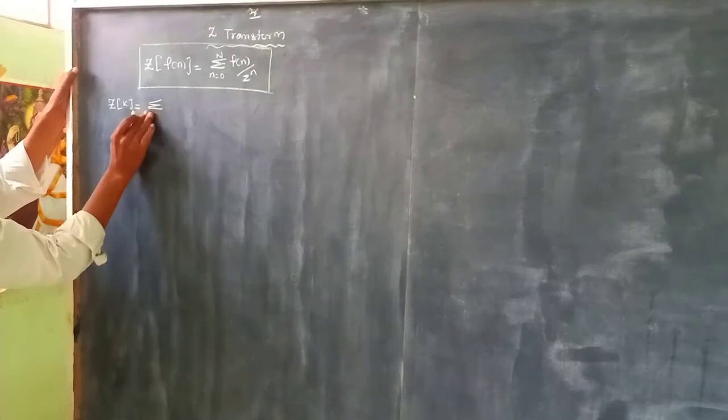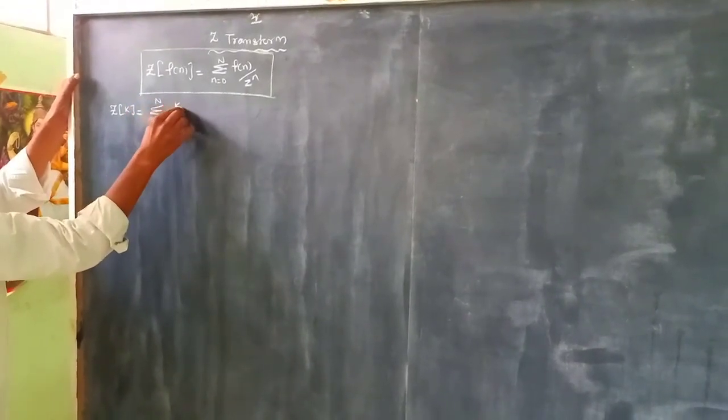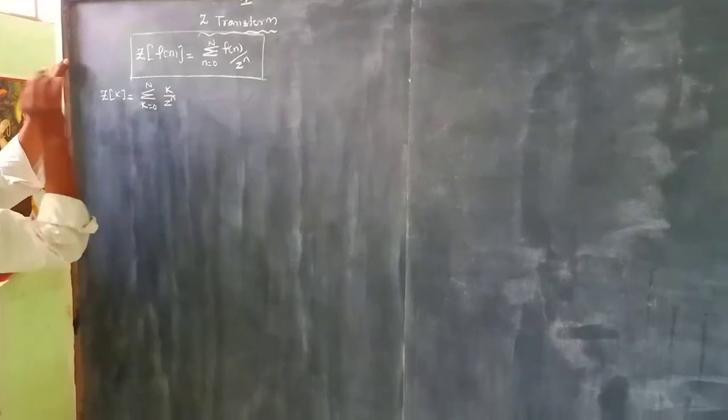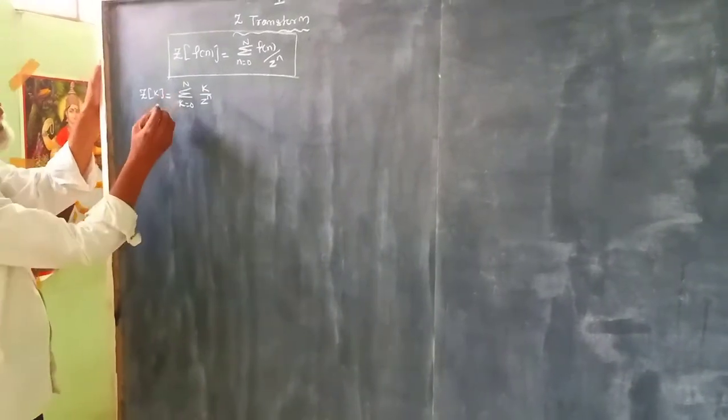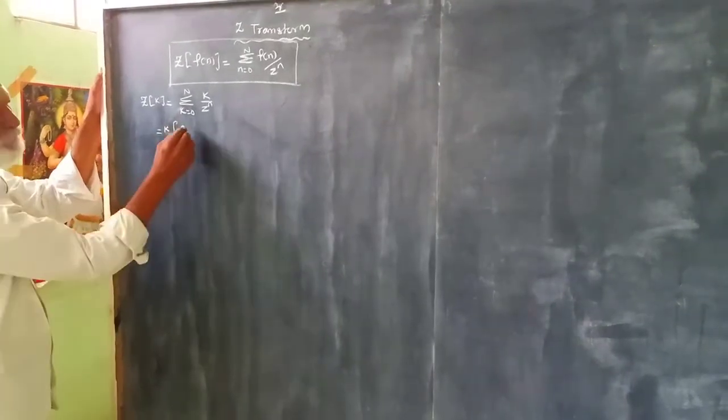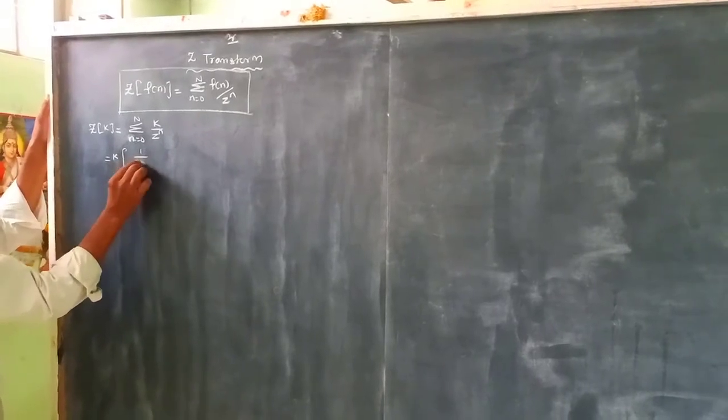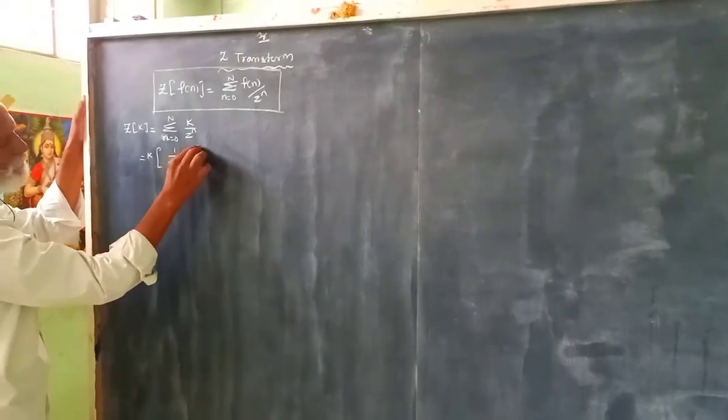Since k is constant from k equals 0 to n, let's substitute: 0 at the first level, then 1, 2, up to n.